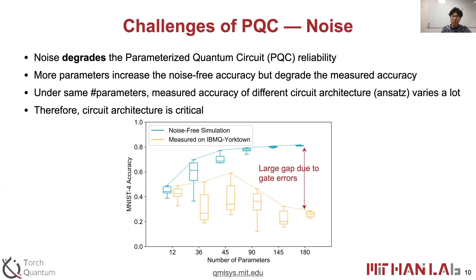The figure below shows the MNIST-4 image classification accuracy using a QNN with different numbers of parameters. We find that more parameters can increase the noise-free accuracy (in green), but may degrade the measured accuracy (in yellow). Also, under the same number of parameters, the measured accuracy of different circuit architectures, called ansatzes, varies a lot. Therefore, it is critical to design noise-robust circuit architectures.